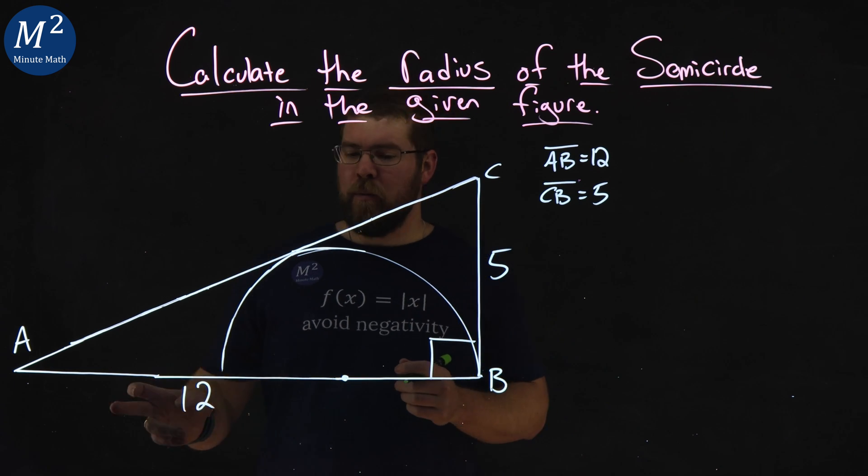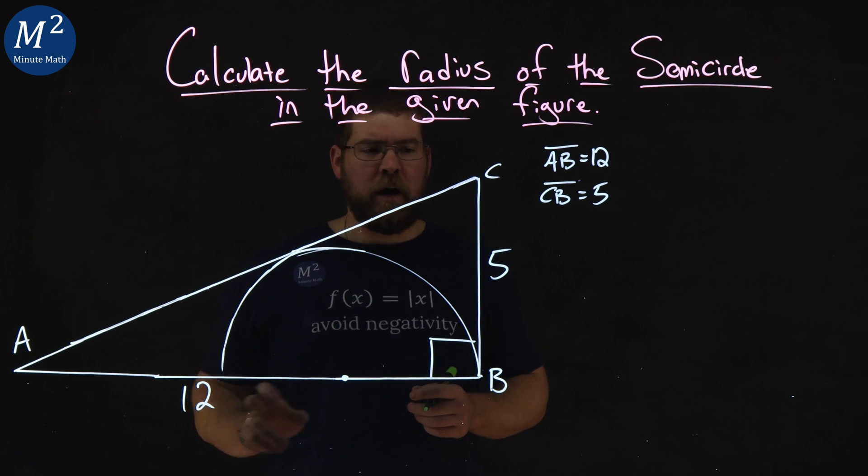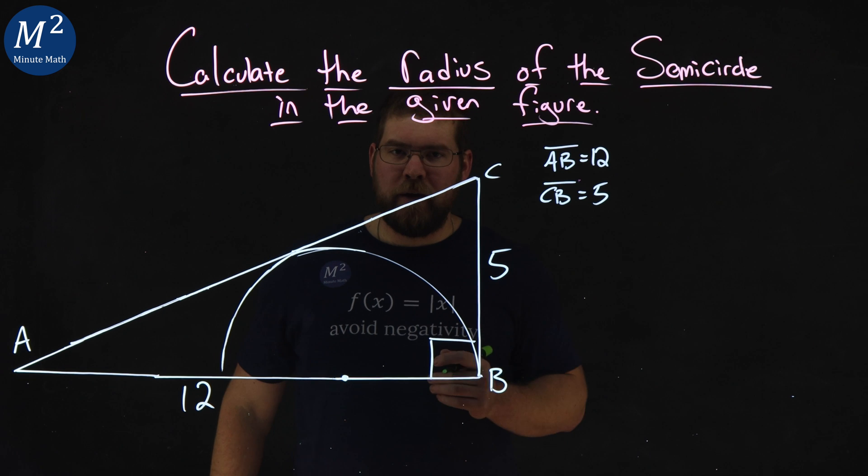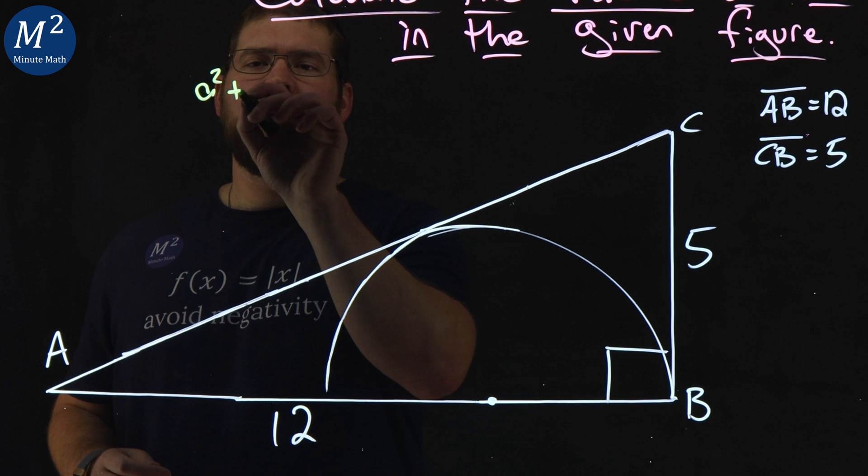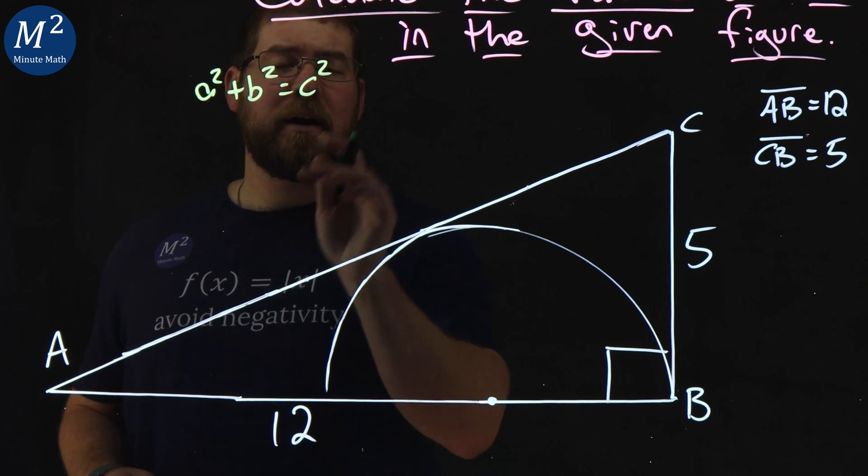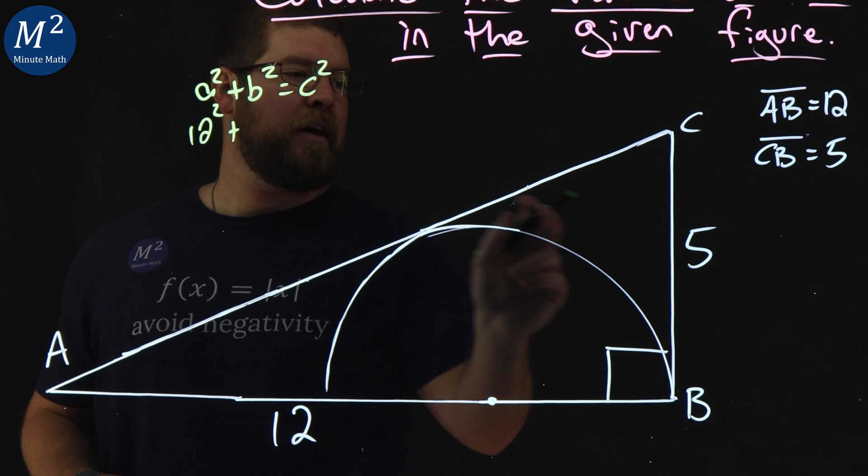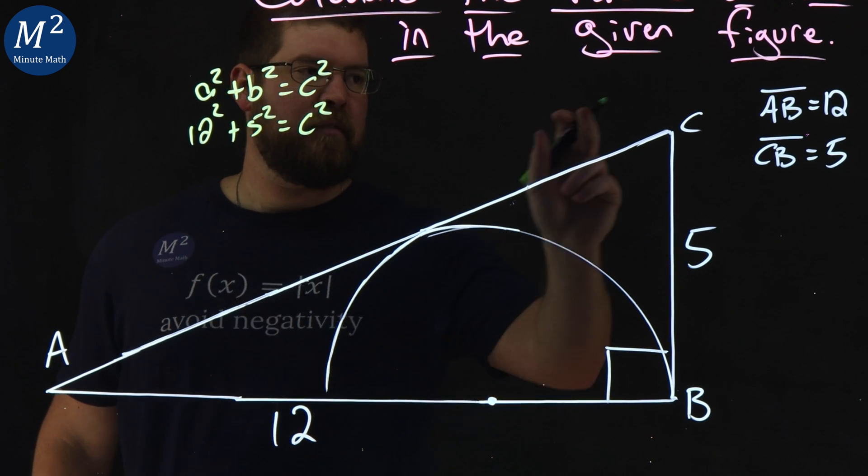Well, first step here is I want to find the missing length of AC. We have 12, and we have 5, and I want to find the length of AC. You should be thinking Pythagorean Theorem. So, we have A squared plus B squared equals C squared. Our A value, let's call it 12. 12 squared plus B value, 5 squared, equals C squared. That's the length of AC.